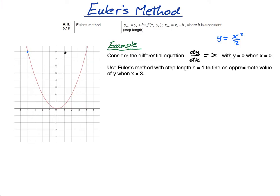What Euler's method does is: we assume the gradient stays at −4 for this step length. The step length h = 1 — the smaller the step length, the more accurate the solution. Let's imagine we use a step length of 2. I'm going to assume the gradient stays as −4 for a step length of 2, so that goes from x = −4 to x = −2. You can see it's clearly not a great approximation — it's reasonable near the start but starts to diverge from the curve.